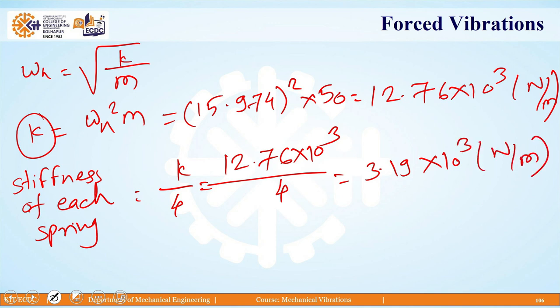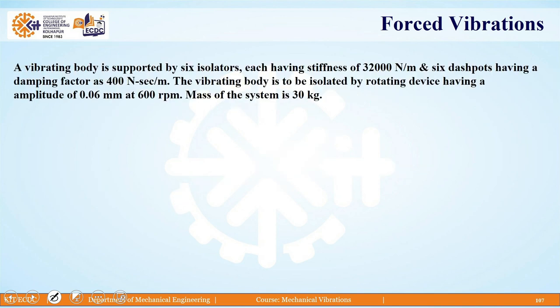This is another type of problem wherein transmissibility ratio constraints are given and you are asked to design the vibratory system with the required stiffness. Let us see the next numerical.